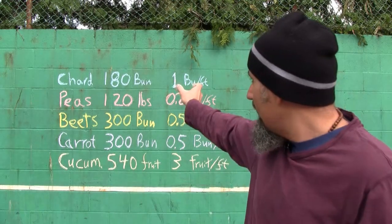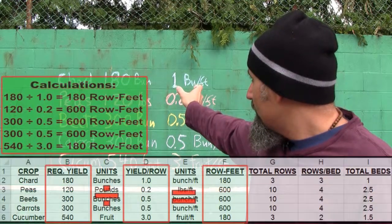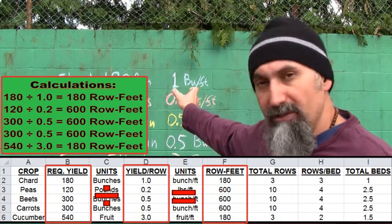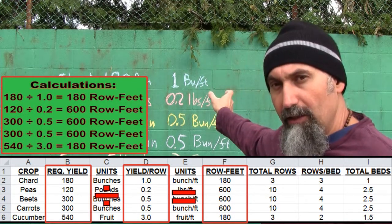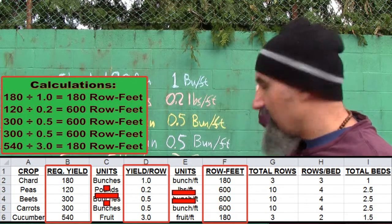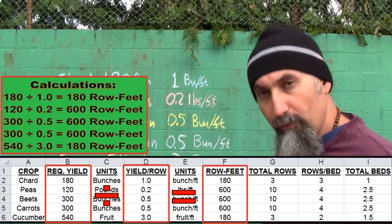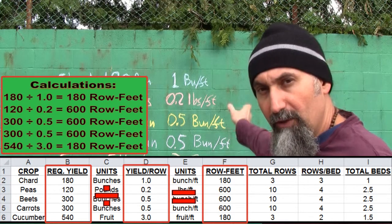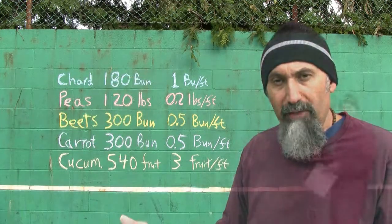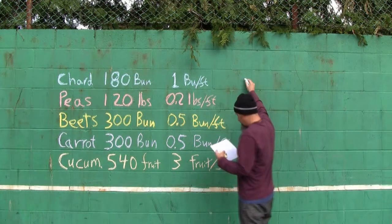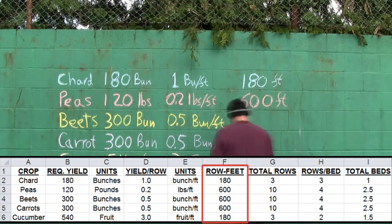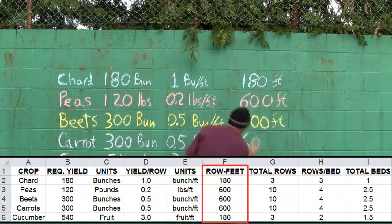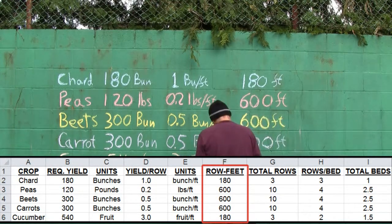All we do is take our total amount needed and divide it by the expected yield, and that gives us the total row feet — the total length of crop we have to plant. That comes out to 180 feet of chard, 600 feet of peas, 600 feet of beets, 600 feet of carrots, and 180 feet of cucumber.